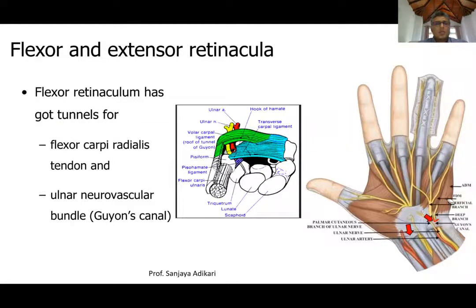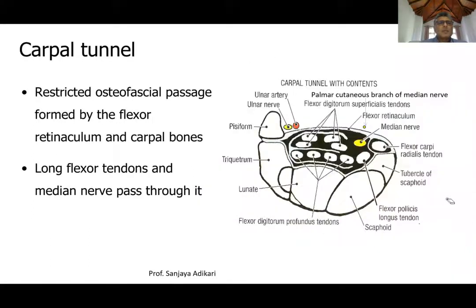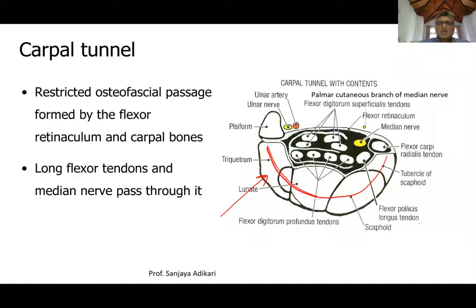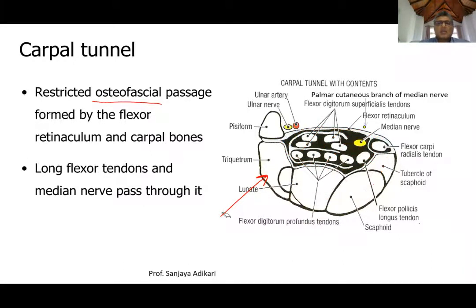The carpal tunnel is a fibro-osseous tunnel — also called an osseo-fascial tunnel — formed by the carpal bones arranged like a gutter posteriorly and the flexor retinaculum anteriorly. Whether you take a proximal section showing scaphoid, lunate, triquetral, and pisiform, or a distal section, the carpal bones form a gutter that is roofed by the flexor retinaculum. The structures passing deep to the flexor retinaculum lie within this carpal tunnel.